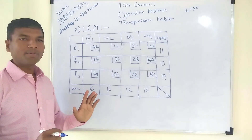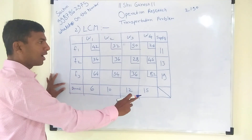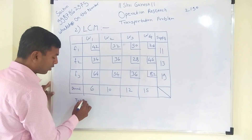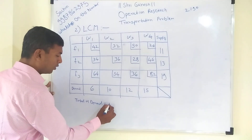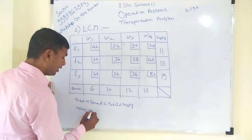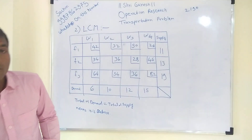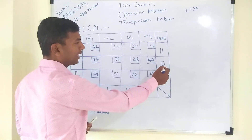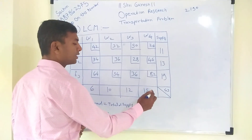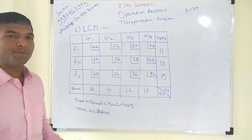The first step is to check whether the given problem is balanced or not. To check balance, you calculate the total of demand and total of supply — if both match, the problem is balanced. Here, 11 + 13 = 24, and 24 + 19 = 43. On the demand side, 6 + 10 = 16, 16 + 12 = 28, and 28 + 15 = 43. Total demand equals total supply (43), so the given problem is balanced.